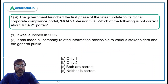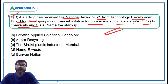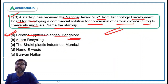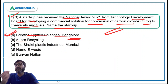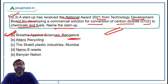Coming back to question number three, the correct answer is option A — Breathe Applied Sciences, Bangalore — as this is the startup that received the National Award 2021 from the Technology Development Board.